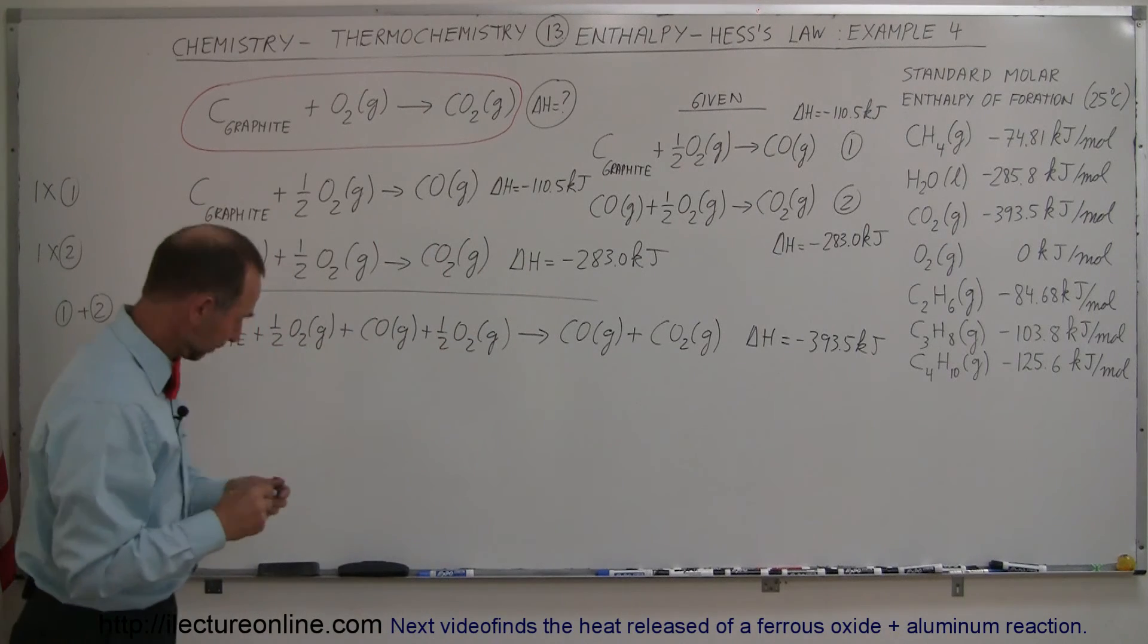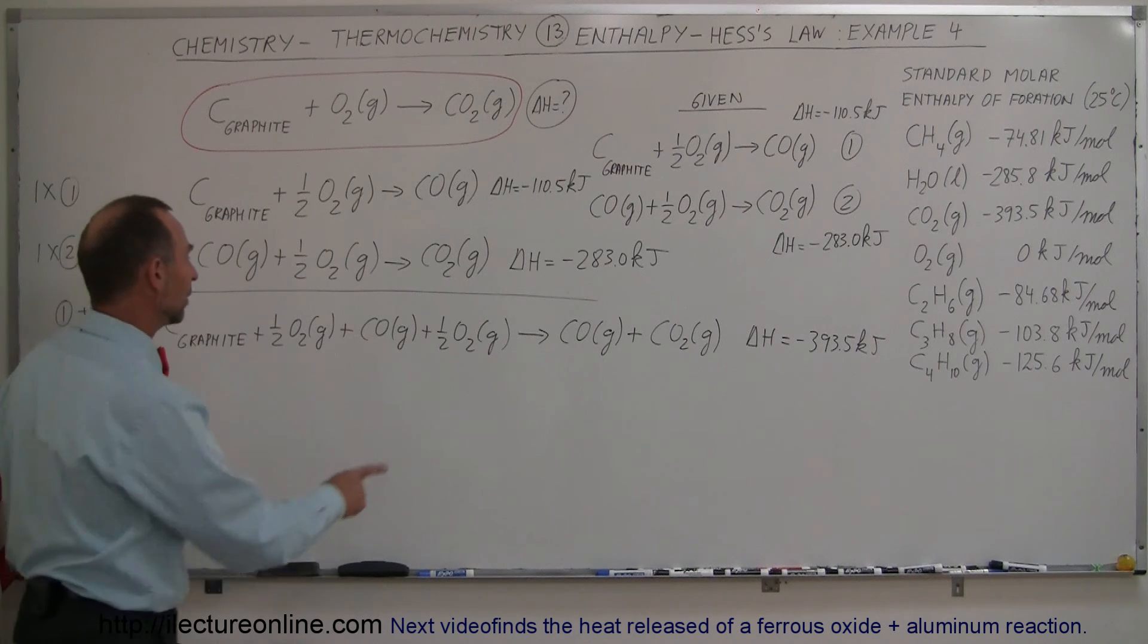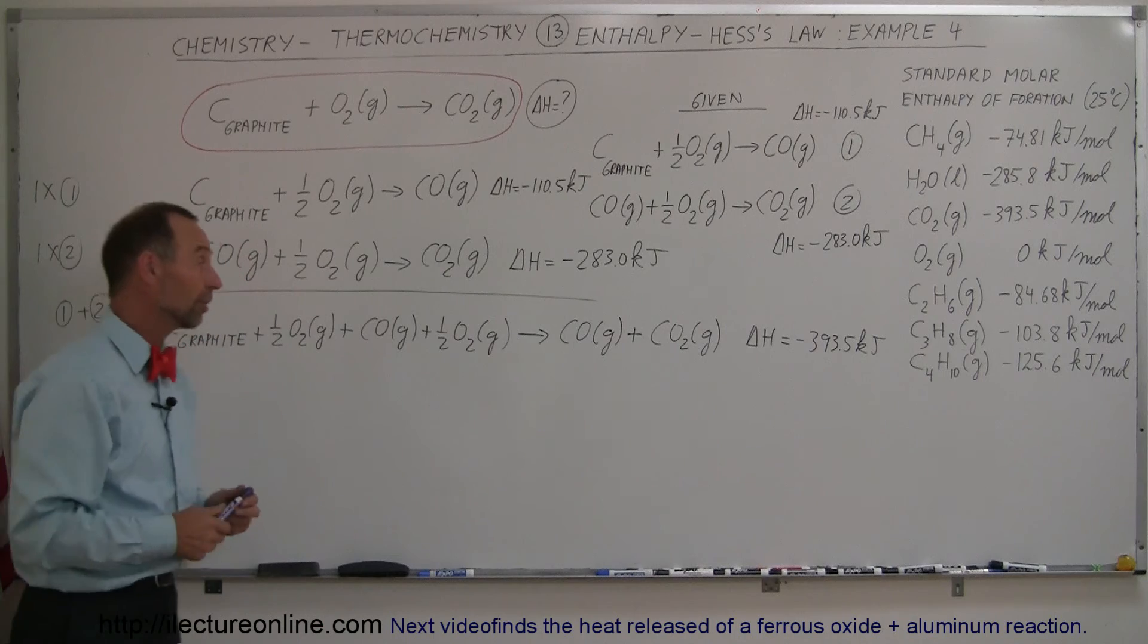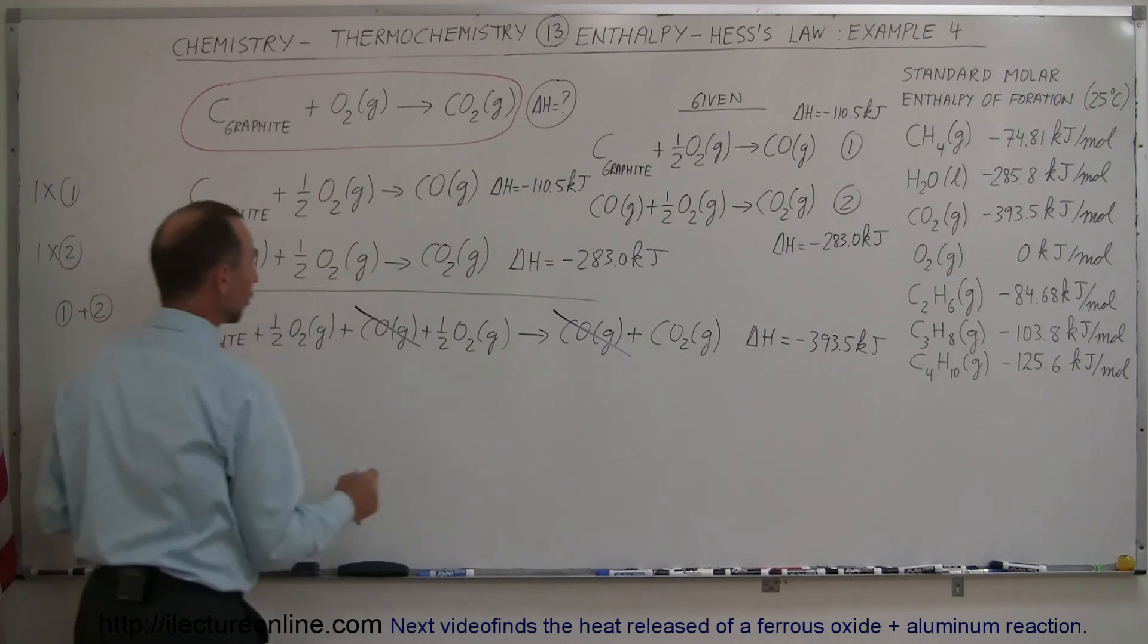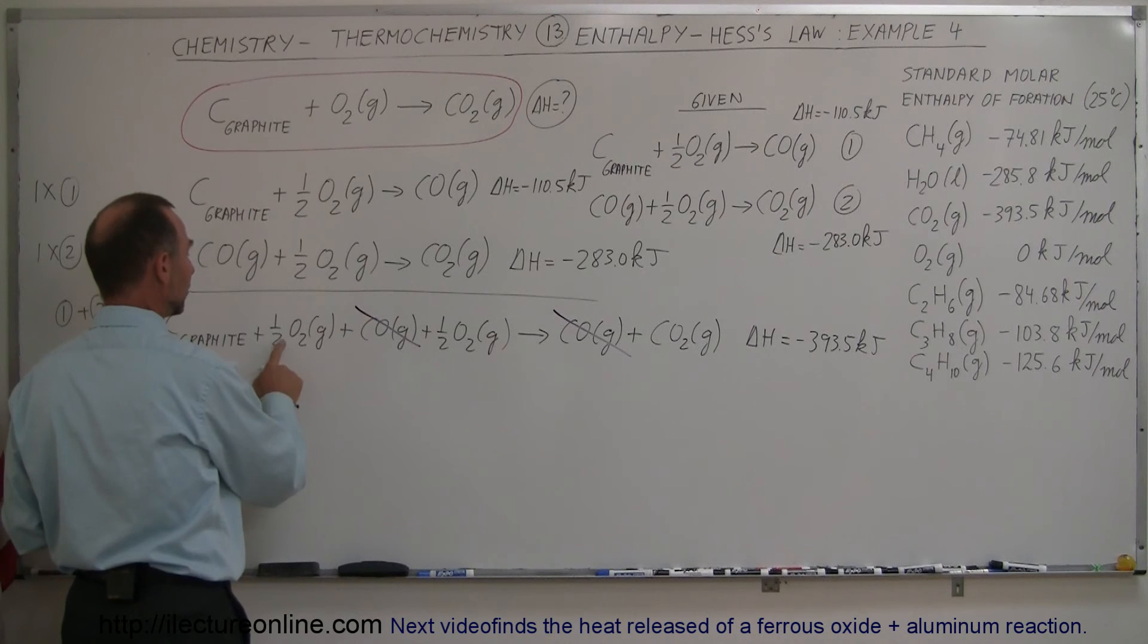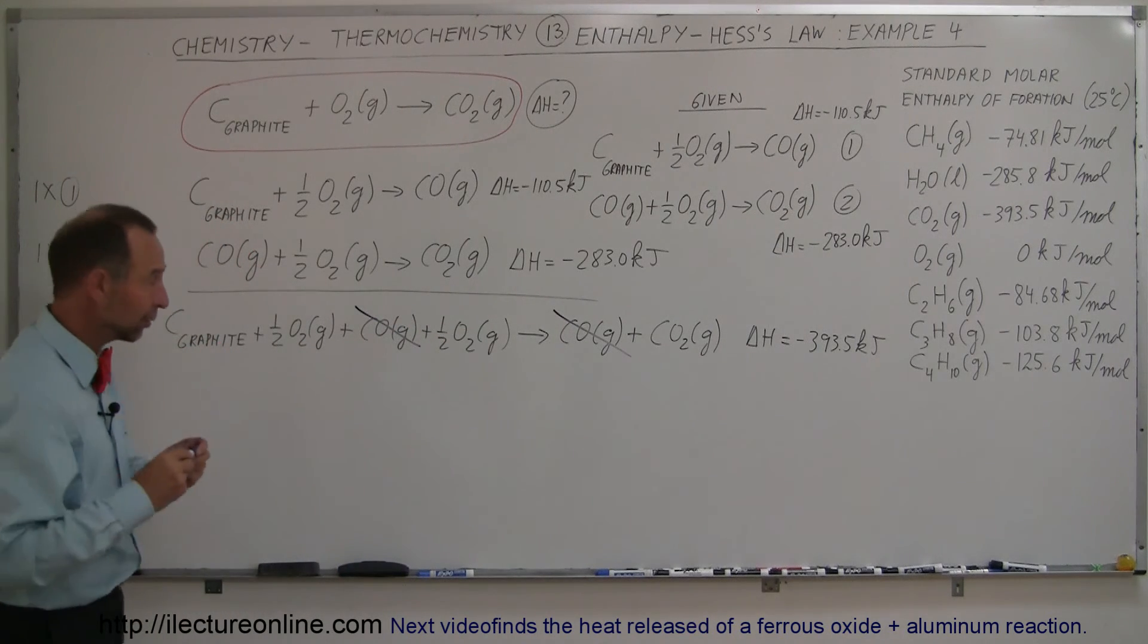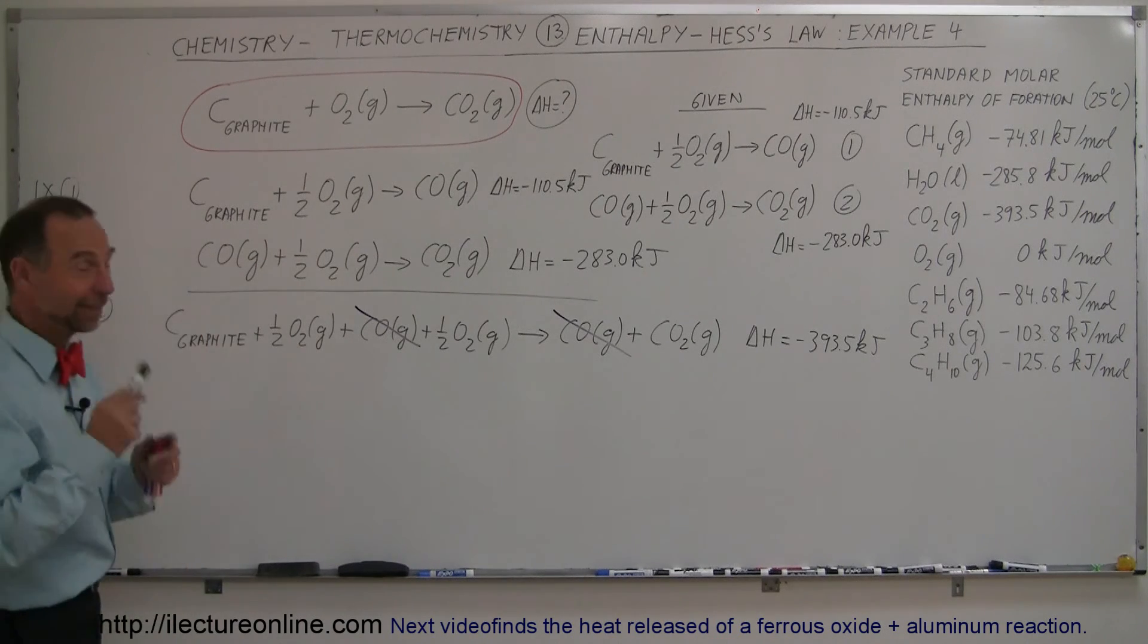Now notice—let me get my other color pen here. Notice that we have carbon monoxide on the left side equation and carbon monoxide on the right side equation, which means they cancel out. Also notice that I have half a mole of oxygen gas plus half a mole; combine those, that gives me a whole mole. If I do that and rewrite this equation—looking for my black pen, here it is.